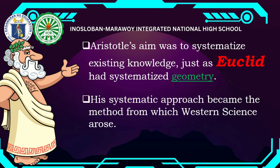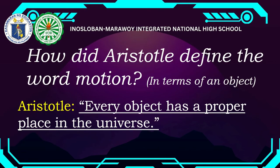Aristotle's aim was to systematize existing knowledge — he wanted to make existing knowledge systematic and provided information to support particular concepts, just as Euclid systematized geometry. His systematic approach became the method from which western science arose. Now, how did Aristotle define motion in terms of an object?